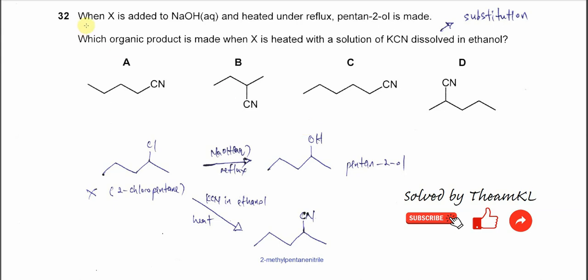Question 32. When X is added to sodium hydroxide aqueous solution and heated under reflux, pentane-2-ol is made. First we need to find the identity of X. Since X can produce an alcohol using sodium hydroxide aqueous solution, X most likely is a haloalkane.